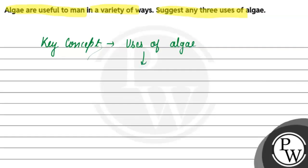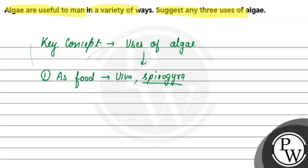Let's talk about three uses. First of all, algae is used for food — use as food. Some algae that are edible, like Spirogyra, are used as food.